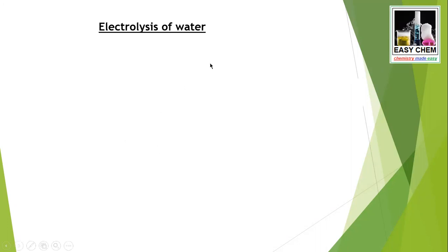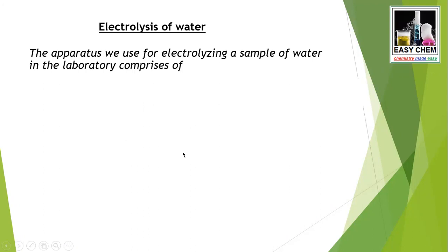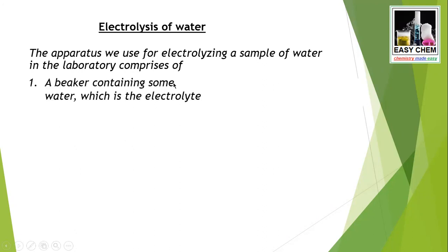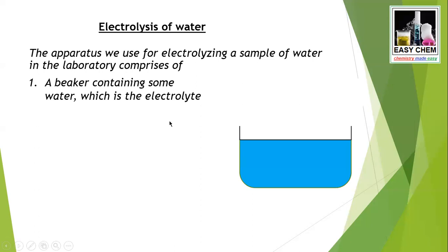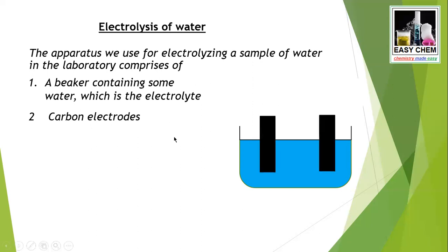Let me talk about the electrolysis of water in detail. It's a simple laboratory experiment. First, we need a beaker containing some water — water acts as the electrolyte here. We insert two probes called carbon electrodes into the solution. These electrodes are the substances we use to pass electric current into the solution from a circuit, using a DC supply.